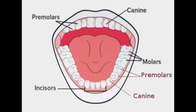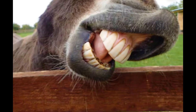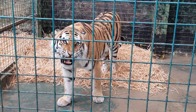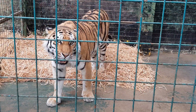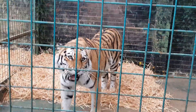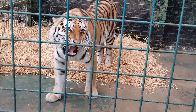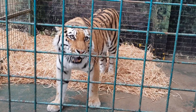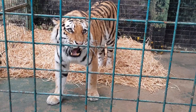Herbivores' teeth — such as canines, incisors and molars — are flat to grind the leaves. Carnivores' canines are long, sharp and curved. Their incisors are short and pointed.